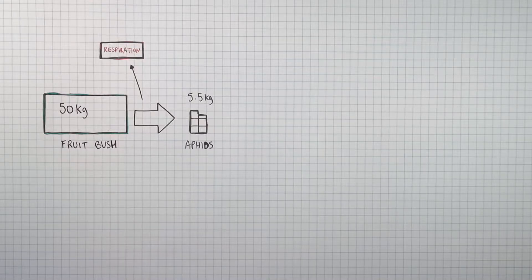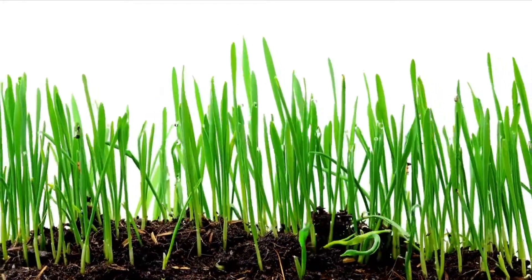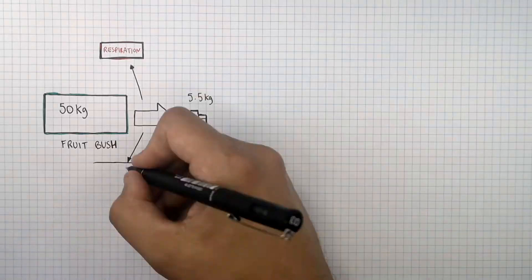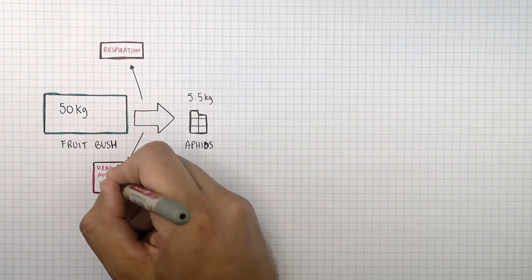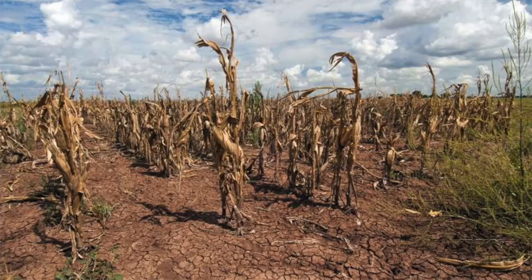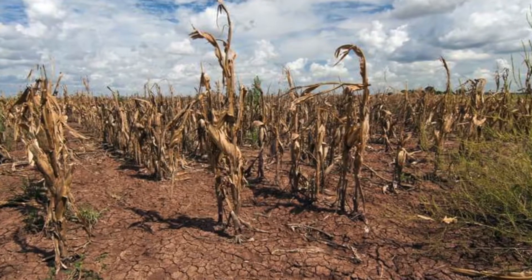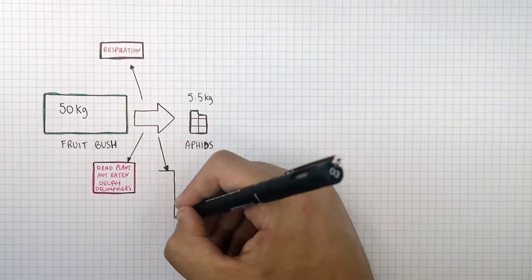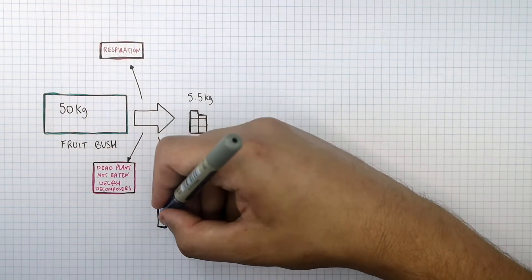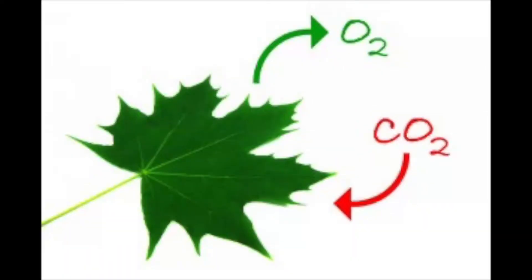Biomass is also lost between trophic levels because the fruit bush requires energy to grow, and this energy comes from cellular respiration. Not all the biomass is eaten — dead plant material that is not eaten decays, so the biomass stored in these plants is not transferred to the next trophic level. Energy stored in the biomass of the fruit bush is also transferred out as waste products, such as oxygen.